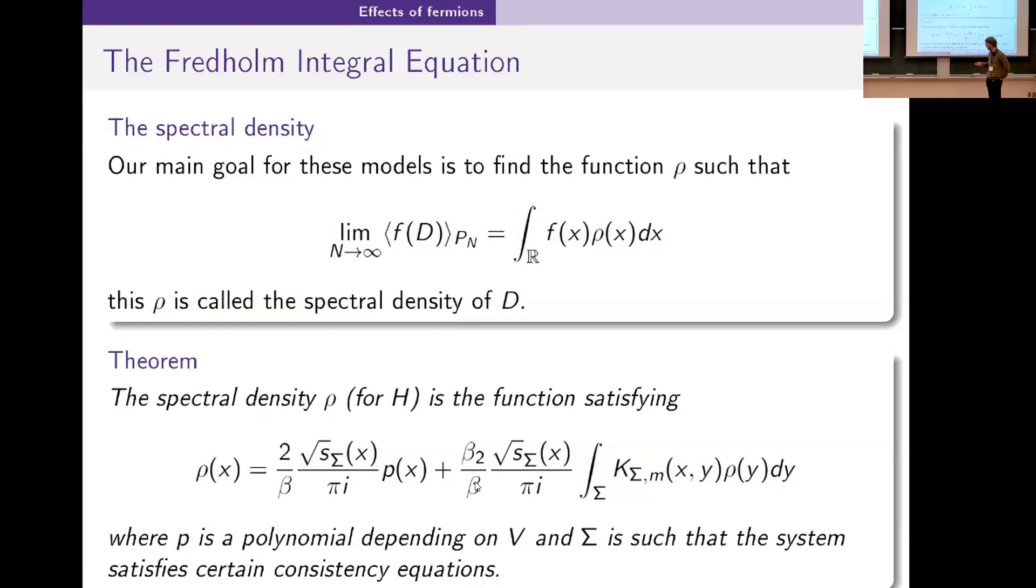Then another interesting thing about this is there's this input capital Sigma that is the support of the spectral density. Determining this support, there's a bunch of extra equations, consistency equations that say for example your spectral density must have total mass one. Conditions like that determine the support.